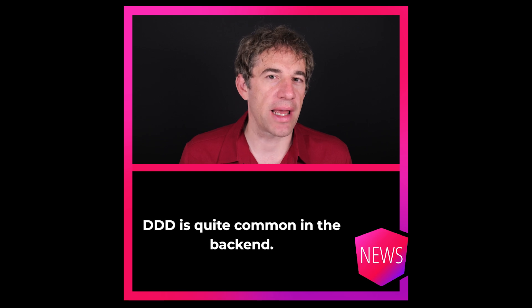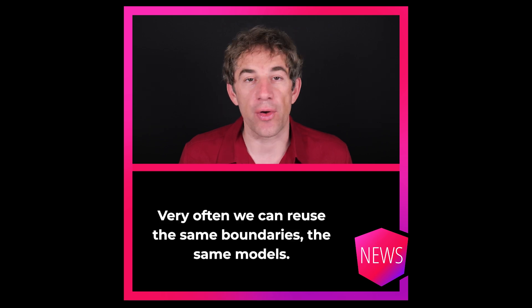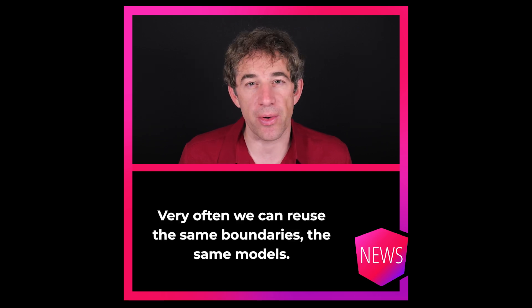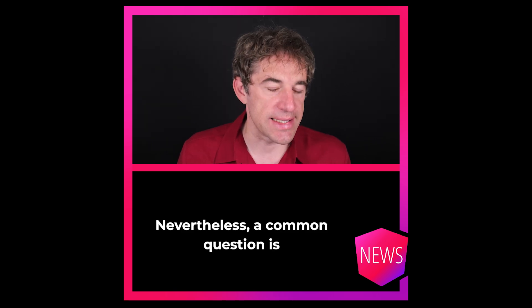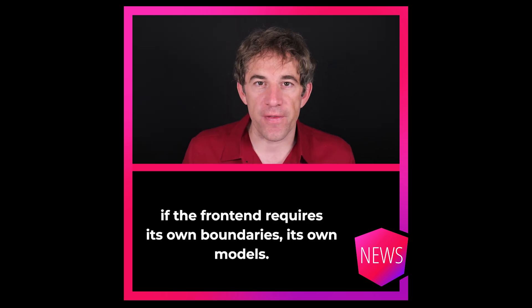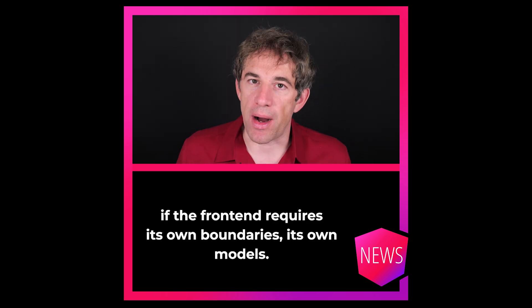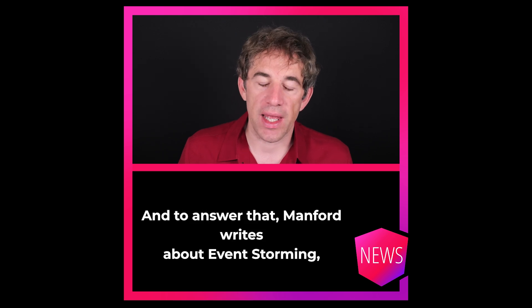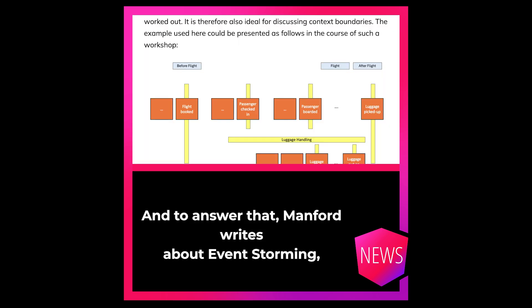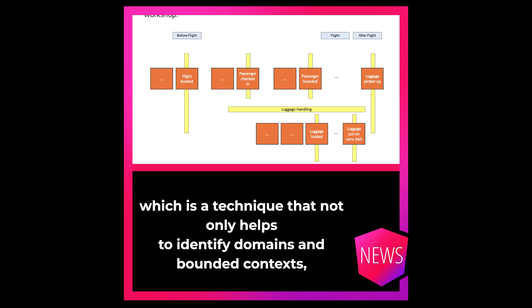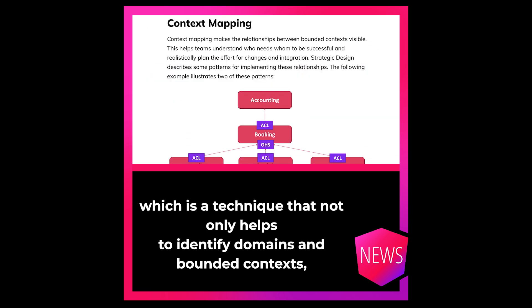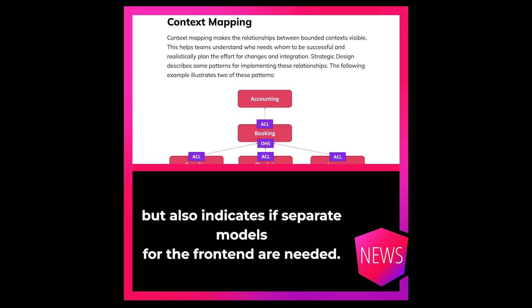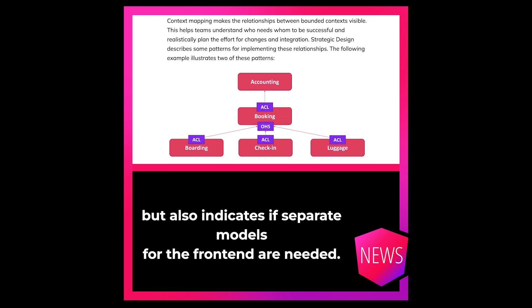DDD is quite common in the backend and very often we can reuse the same boundaries, the same models. Nevertheless, a common question is if the frontend requires its own boundaries, its own models. And to answer that, Manfred writes about event storming, which is a technique that not only helps to identify domains and bounded contexts, but also indicates if separate models for the frontend are needed.